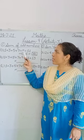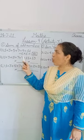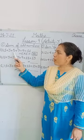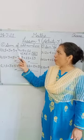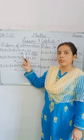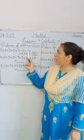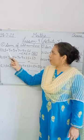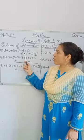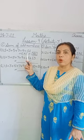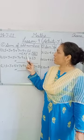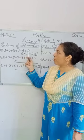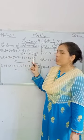Yeh saare odd numbers ki addition ka short form hai. Aap jab isko add karenge: 1 plus 3 is 4, 4 plus 5 is 9, 9 plus 7 is 16, 16 plus 9 is 25, 25 plus 11 is 36. Add karne pe bhi 36 aayega, aur direct method se 6 multiplied by 6 is equal to 36. So the sum of all odd numbers from 1 to 11 is 36.